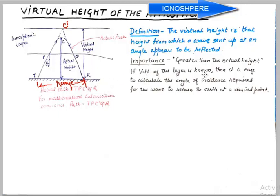If virtual height of the layer is known, it is easy to calculate the angle of incidence. We can also find the range and know the desired path or the point at which the wave will turn back.